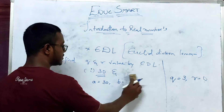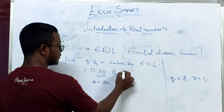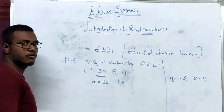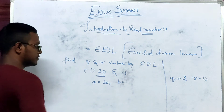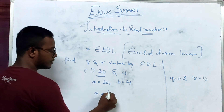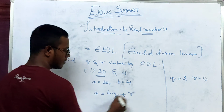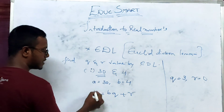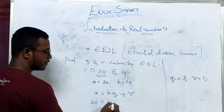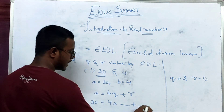Now I am keeping b as 4. So 4 is equal to check. The formula is a equals bq plus r. What is a? 30. So 30 equals — what is b? 4. So 4 into dash plus dash.